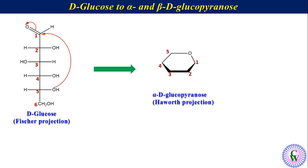There are 4 chiral centers in Fischer: C2, C3, C4 and C5. Let's first consider the chiral centers except the downmost — that is C2, C3 and C4. As we can see in the Fischer projection formula, the OH on C2 is on the right, so it will be down in Haworth. At C3 in Fischer, OH is on the left, so it will be up in Haworth. On C4 it is on the right, so in Haworth it will be down. For C1, since it is the alpha anomer, OH will be down.